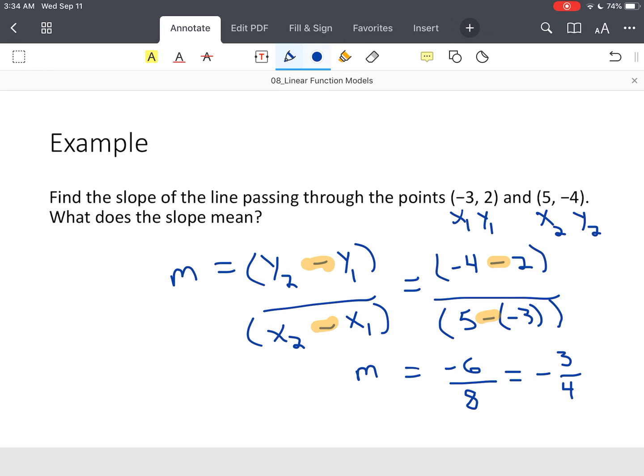Alright, so now by me knowing that this is a negative slope, if I wanted to check my work, I would have to graph the line. I know my line should be falling from left to right.